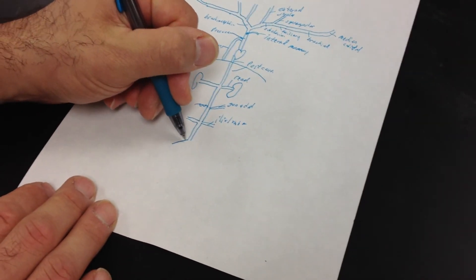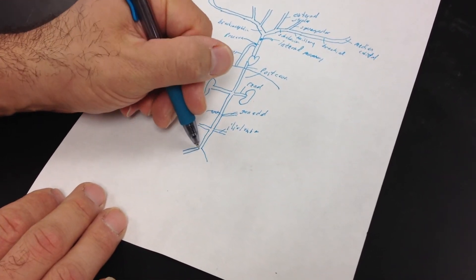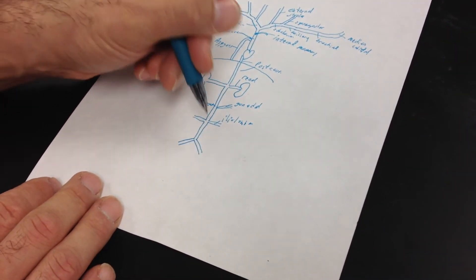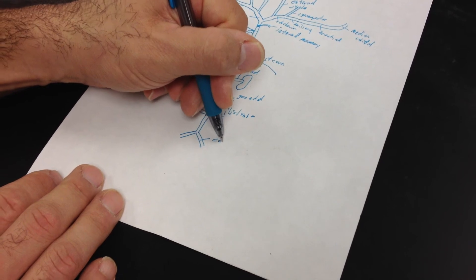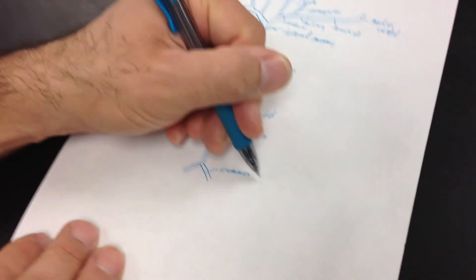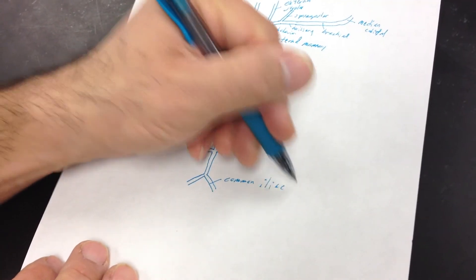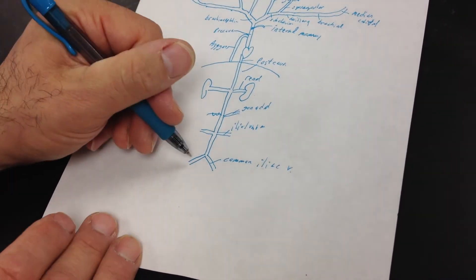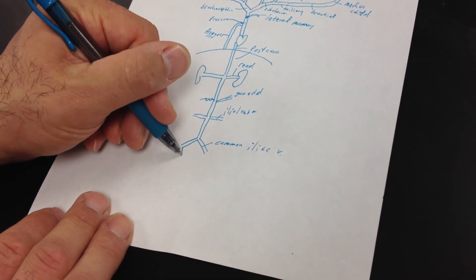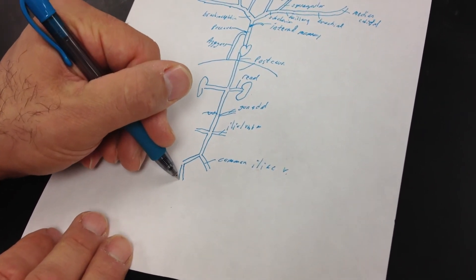So the first branch, this is going to be called the common iliac vein. And then the common iliac is going to branch. And the first branch kind of goes down here.